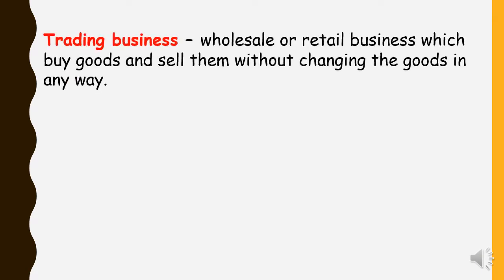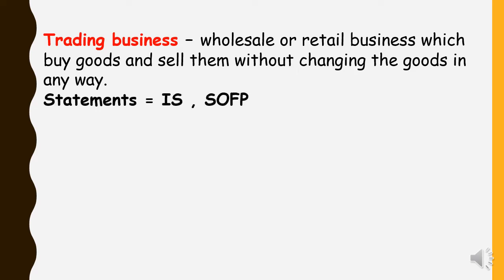First, we look at the difference between a normal trading business and a manufacturing business. A trading business is a business that buys goods and sells them — they don't change anything, they just buy and then sell. Trading businesses normally prepare two statements: the income statement and the statement of financial position.